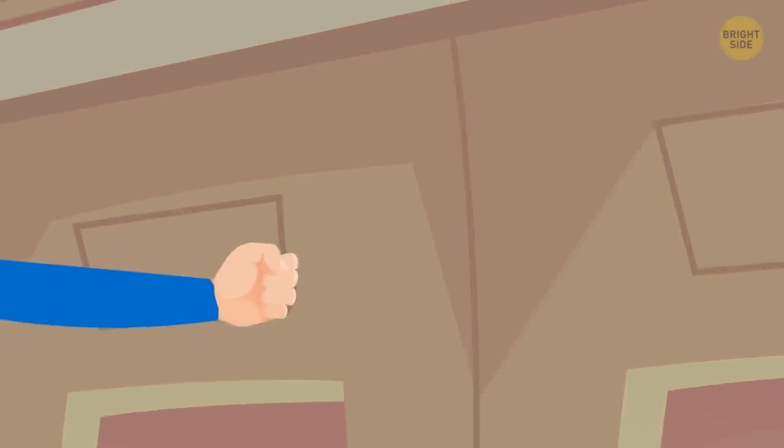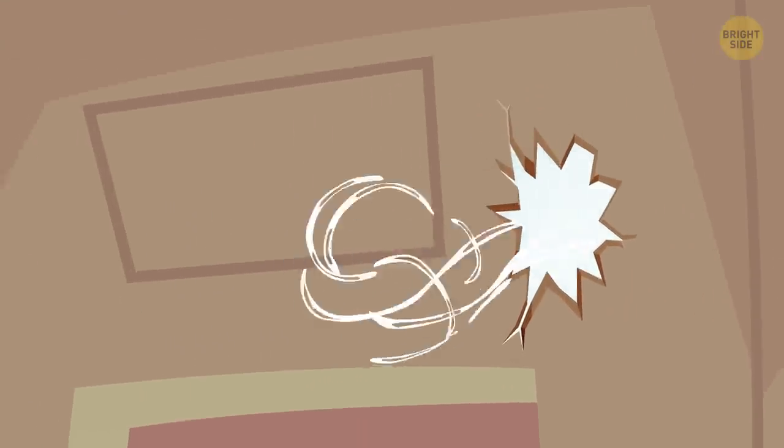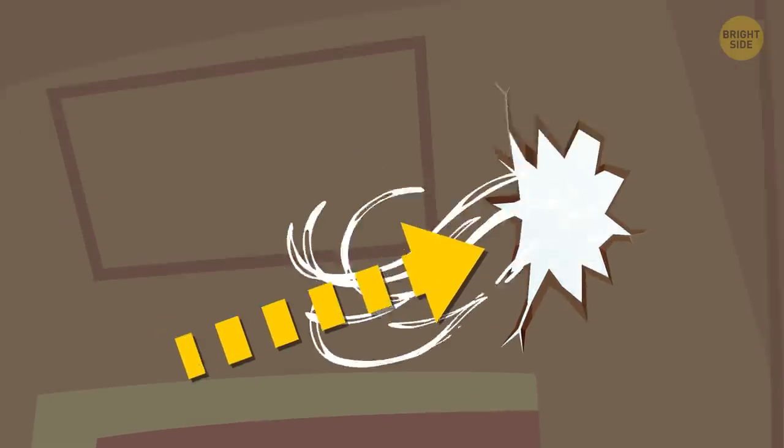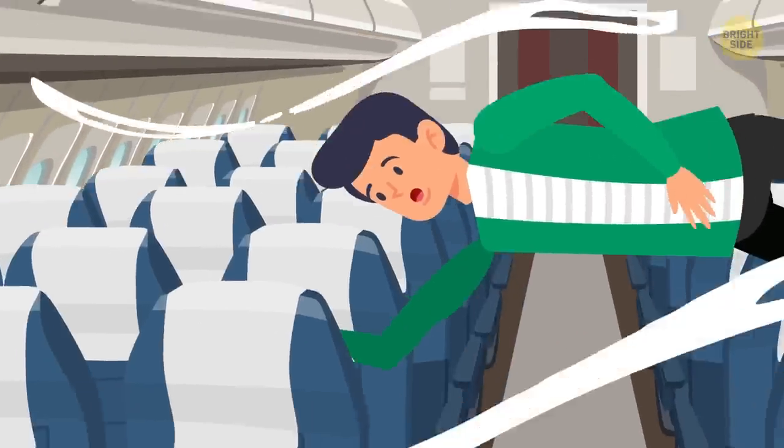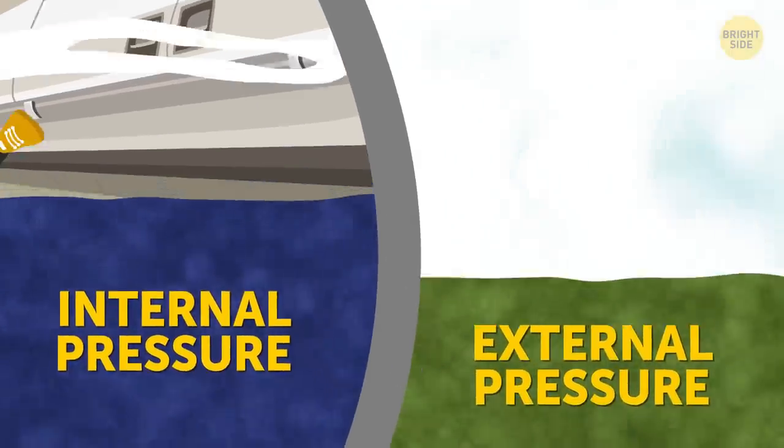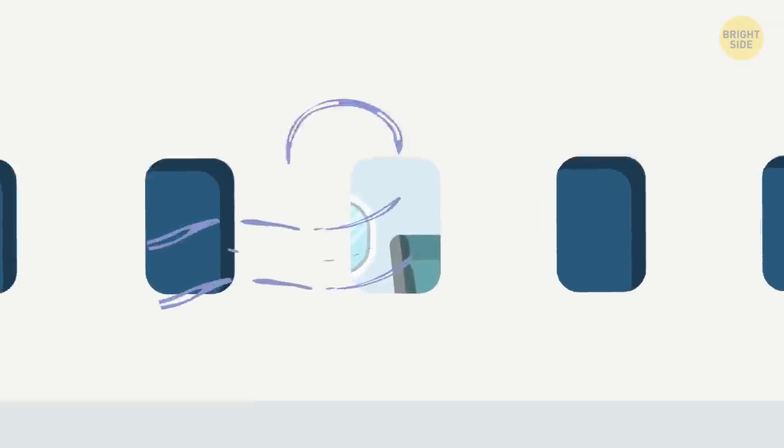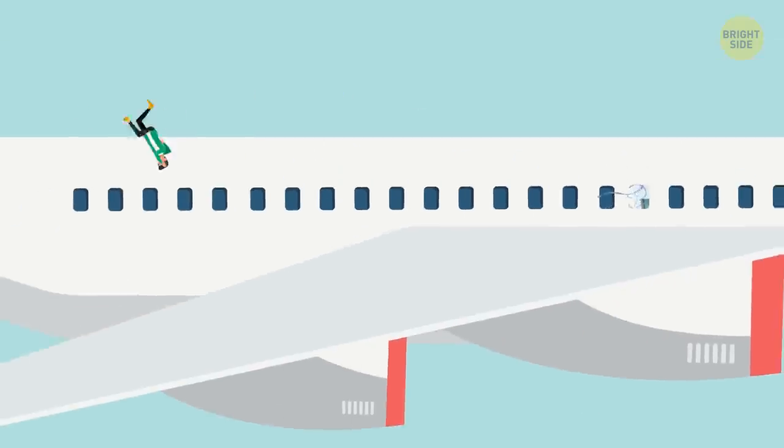But imagine that something punched a hole in such a pressure vessel. The air inside the plane would immediately want to escape due to the difference in the pressure outside and inside. That means the air would keep rushing out of the aircraft until the pressure became equal. An equally strong wind would head out, and theoretically, it might be powerful enough to push a person out the window.